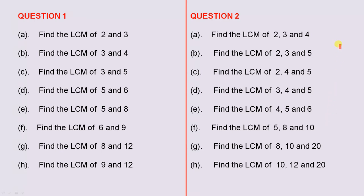So if you remember what the lowest common multiple is — it's the lowest number that all the given numbers will divide into evenly. For example, taking number G, the lowest common multiple of 8, 10, and 20 is the lowest number that 8, 10, and 20 will divide into evenly.